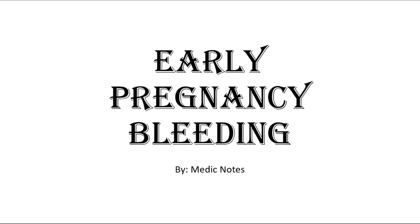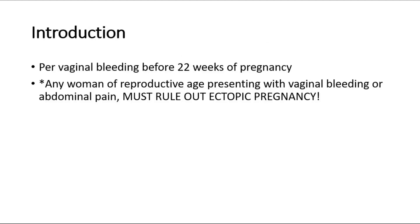Welcome back to another video of Medic Notes. This video is on early pregnancy bleeding, which is defined as pervaginal bleeding before 22 weeks of pregnancy. For any woman of reproductive age presenting with vaginal bleeding or abdominal pain, we must always remember to rule out ectopic pregnancy.